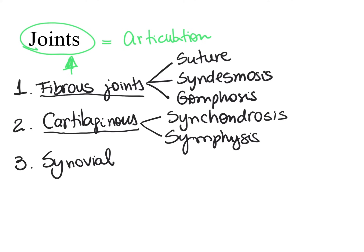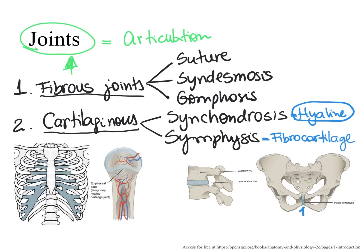In the synchondrosis cartilaginous joint, we find hyaline cartilage — the most abundant cartilage in our body, which is tough but also somewhat flexible. In the symphysis cartilaginous joint, we find fibrocartilage, which is the tough, fibrous type. We find fibrocartilage between the two pubic bones — and since this is fibrocartilage, this is a symphysis, specifically called the pubic symphysis.